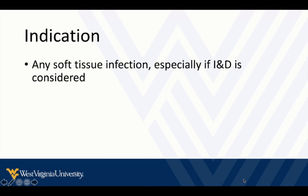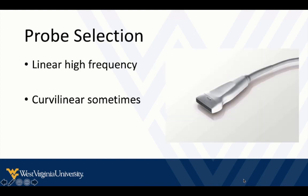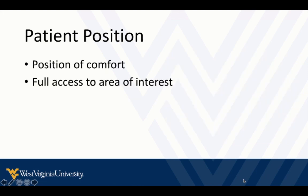If it turns out normal and you don't see anything, it gives you extra reassurance. For most of these, they'll be fairly superficial, so we use the linear high-frequency probe. But there are occasions where the lesion is larger, very deep, or very wide, and you may break out the curvilinear probe for a bigger or deeper view. Patient positioning depends on where the lesion is — unlike cardiac, just whatever position is comfortable and gives you full access. Exposure is key — make sure the area is fully exposed.